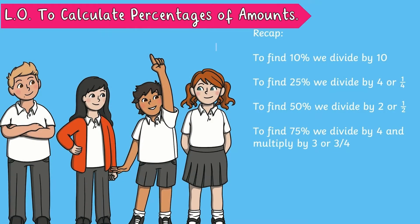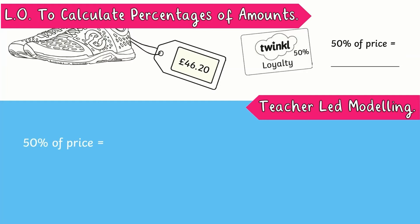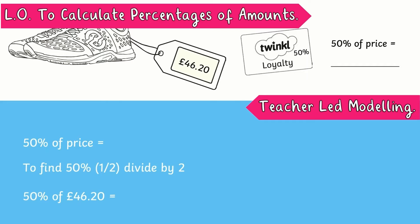To find 10% we divide by 10. To find 25% we divide by 4, or a quarter. If I want to find 50% of a price, as in £46.20, I have to divide by 2. So 50% of £46.20 becomes £23.10.